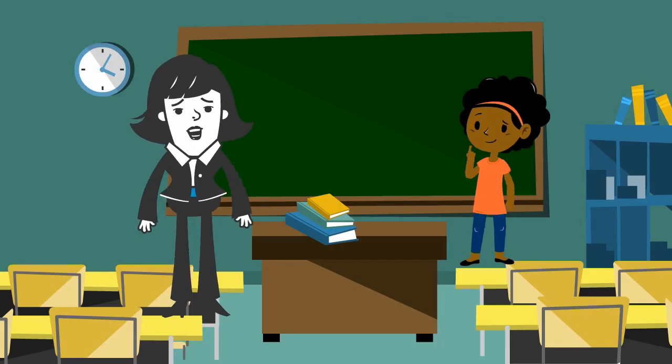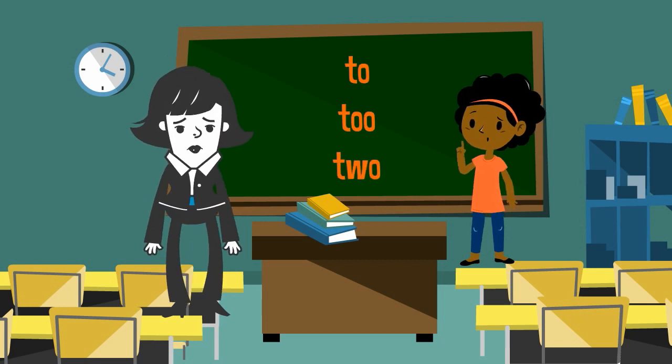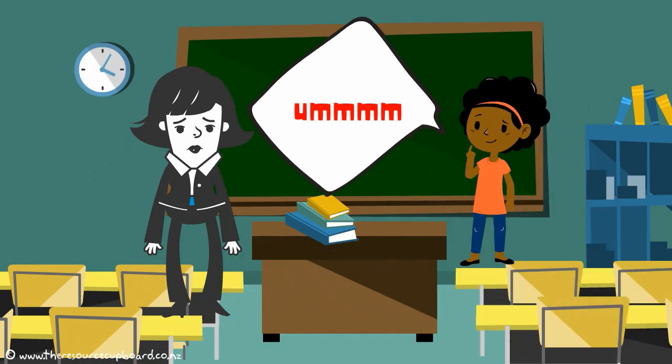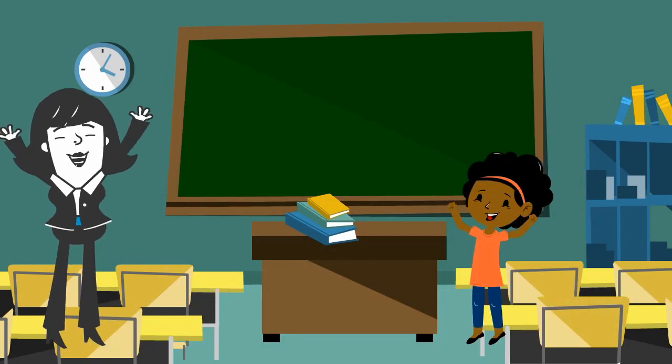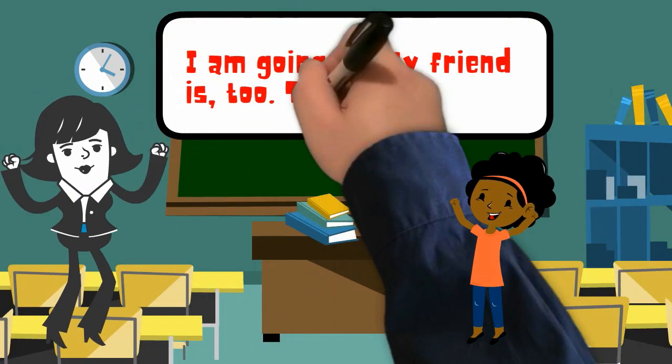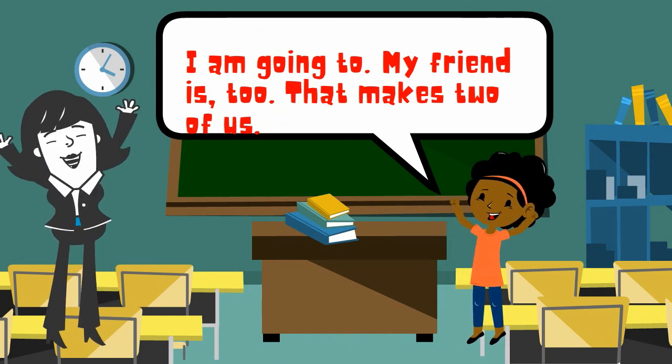So, next time your teacher asks you to write two, two, two correctly in your writing, instead of going um, you'll be able to say, I am going to. My friend is going too. That makes two of us. And then giggle madly as she applauds your extreme intelligence.